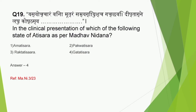Question number 19: 'Yasya Uchcharam Vina Mutram Samyag Vayushcha Gachchhati Diptagner Laghukoshthasya' is seen in the clinical presentation of which state of Atisara as per Madhavanidana - Amatisara, Pakvatisara, Raktatisara, or Gatatisara? The correct answer is option 4, Gatatisara. With the help of the shloka, we can easily eliminate Amatisara and Raktatisara. In light of this question, Gata Lakshana or Mukta Lakshana of Jwara, Unmada, and Prameha must also be noted.